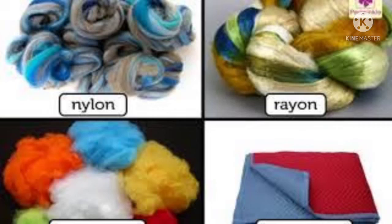To prepare rayon, cellulose is chemically treated in three different ways to obtain three different kinds of rayon. The first one is viscose rayon, the second one is acetate rayon, and the third one is cupra ammonium rayon.